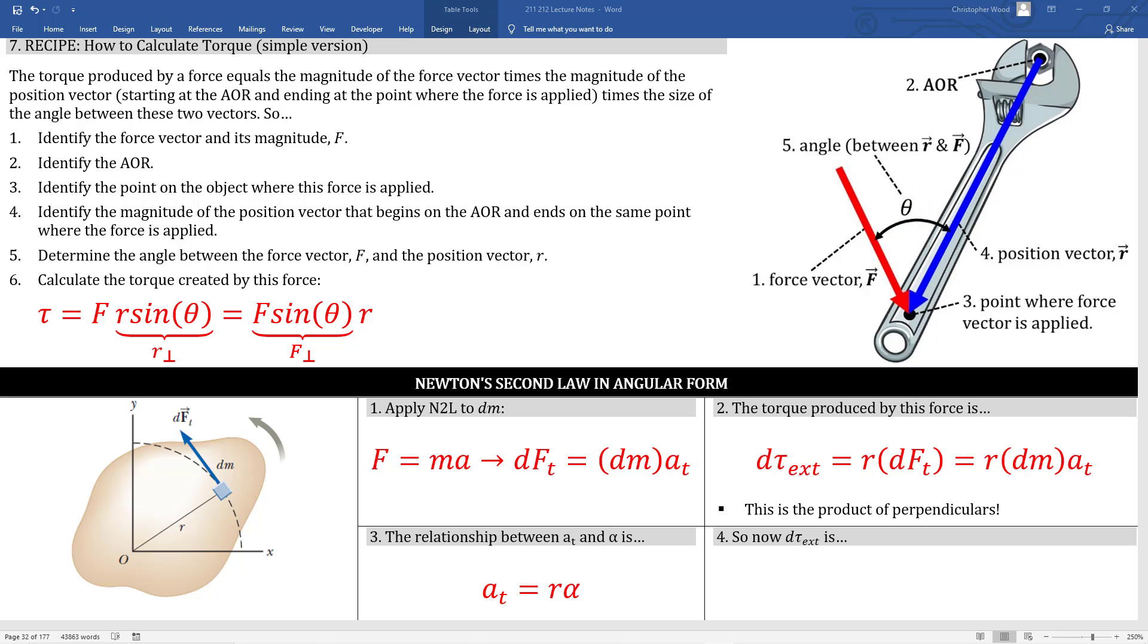All of this might look pretty heavy at first glance, but it's basically organizing you into finding the two vectors, the applied force vector and the torque arm, multiplying them together and multiplying by the sine of the angle between them. The sine function captures perpendicularity. Remember, torque is the product of perpendiculars, the magnitude of the force times the torque arm times the sine of the angle between those two vectors.